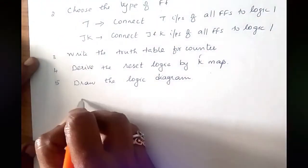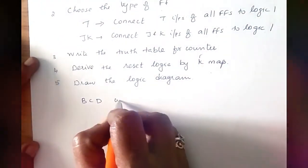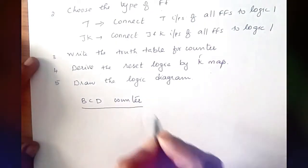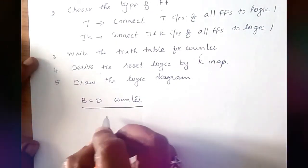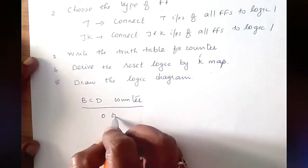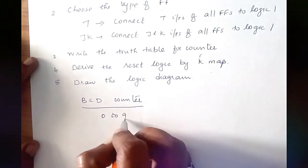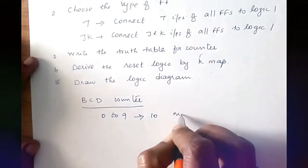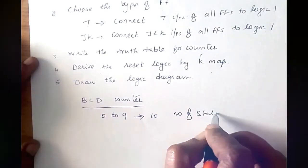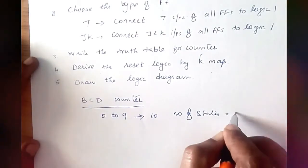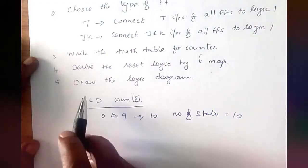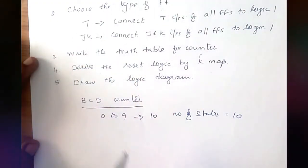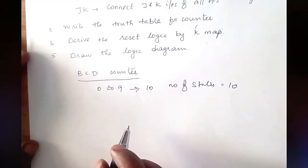Now we are going to design a BCD counter. A BCD counter consists of 0 to 9 numbers, so totally 10 numbers. The number of states equals 10. The first step is to determine the number of flip-flops needed.